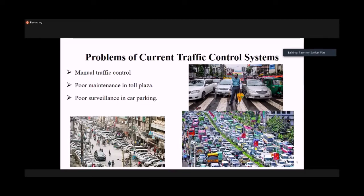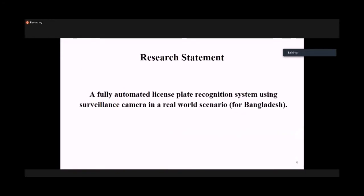We have found three major problems: manual control, traffic control, toll maintenance in toll bridges, and surveillance in car parks. Our research system is a fully automated license plate recognition system using surveillance cameras in a real-world scenario. We have implemented this for Bangladesh right now, but it can be implemented for any country with simple modification.